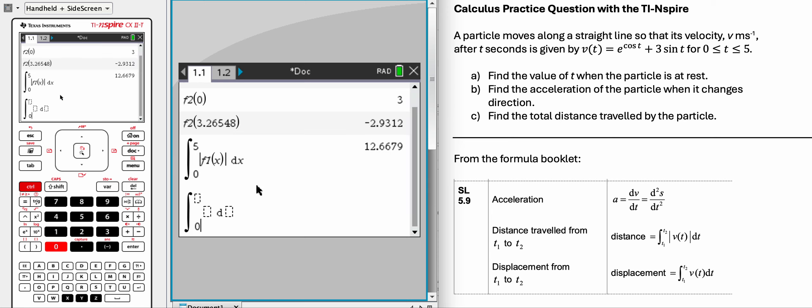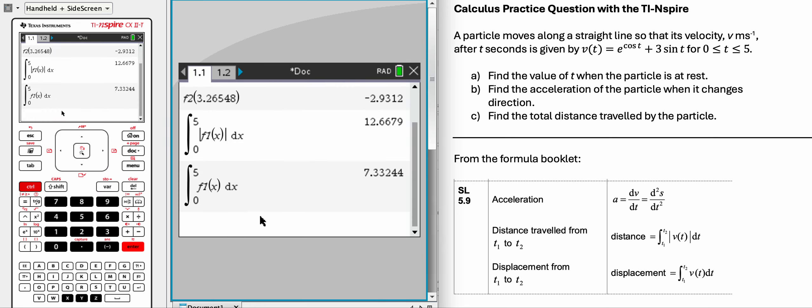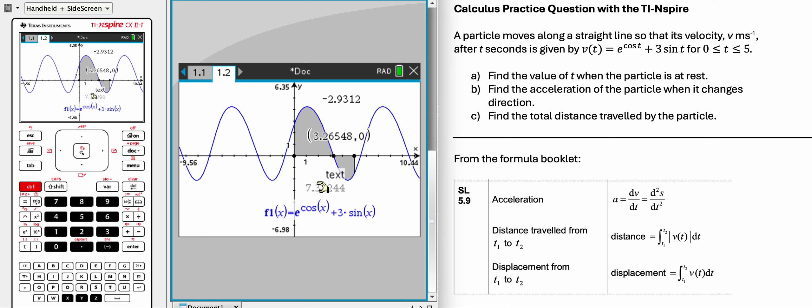So 0 to 5. No absolute value this time. f1 of x dx. And you can see that 7.33 is this answer.